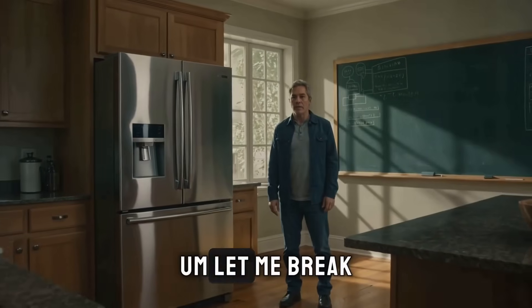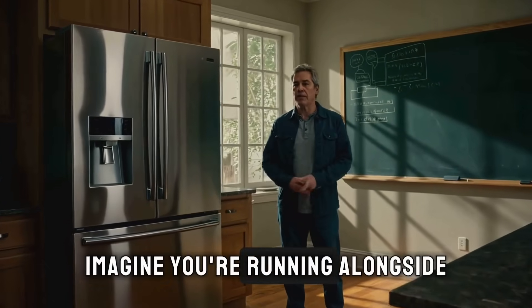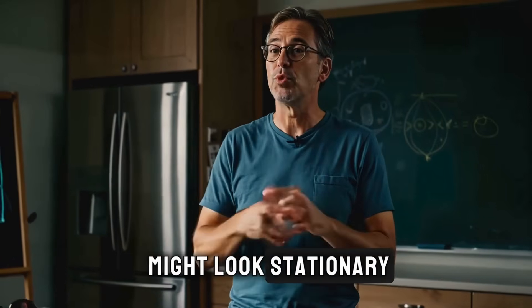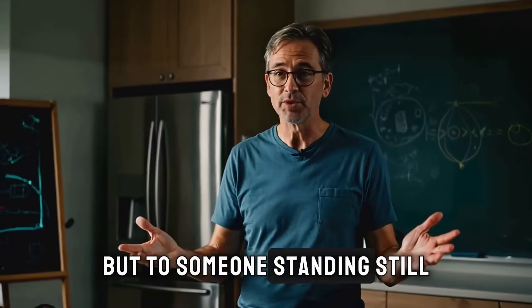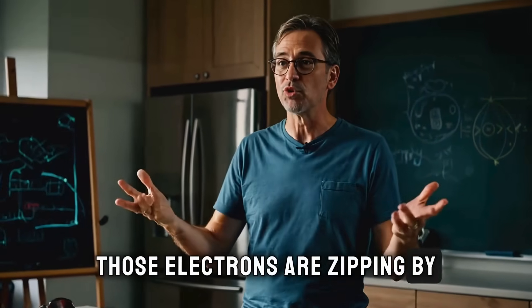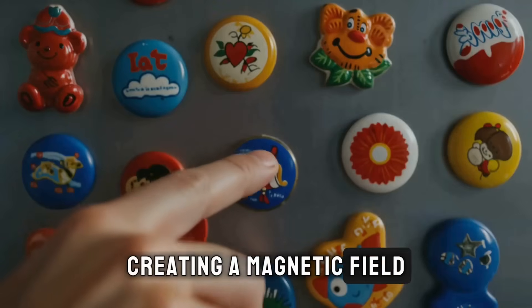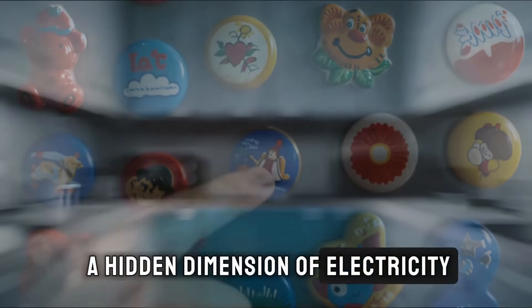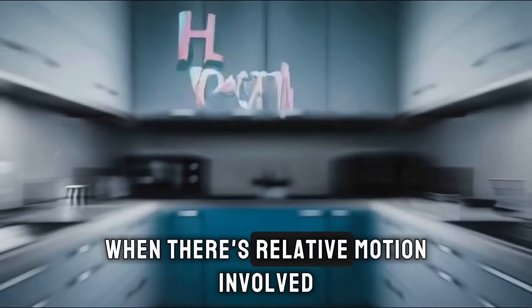Let me break it down for you. Imagine you're running alongside a stream of electrons. From your perspective, they might look stationary. But to someone standing still, those electrons are zipping by, creating a magnetic field. It's like the magnetic field is a hidden dimension of electricity that only shows up when there's relative motion involved.